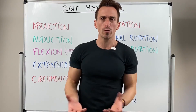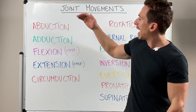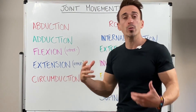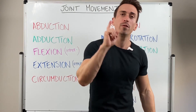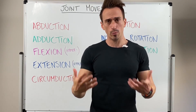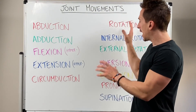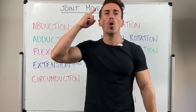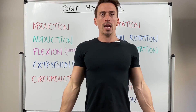The different gross movements that a joint can perform have different names, which I've written up on the board, and we're going to go through them one by one. But before we begin, you need to understand something called the anatomical position, because when we refer to each of these types of joint movements we always have the anatomical position in mind.